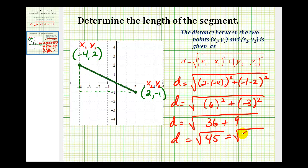Well, 45 is the same as 9 times 5 and 9 is a perfect square. So the distance between these two points or the length of the segment would be 3√5.